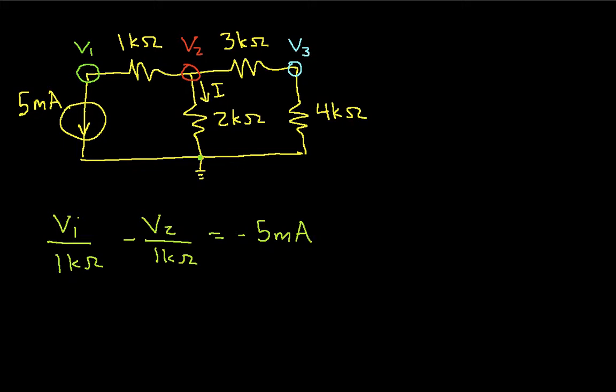Okay, so again, the way we do this is we look at the node. We see that there's a 1kΩ resistor connected to it. So that gives us the V1 over 1kΩ. Then we look at the other voltages which are connected through resistors to the node. And we see that V2 is connected through the 1kΩ resistor. And so that ends up giving us the minus V2 over 1kΩ.